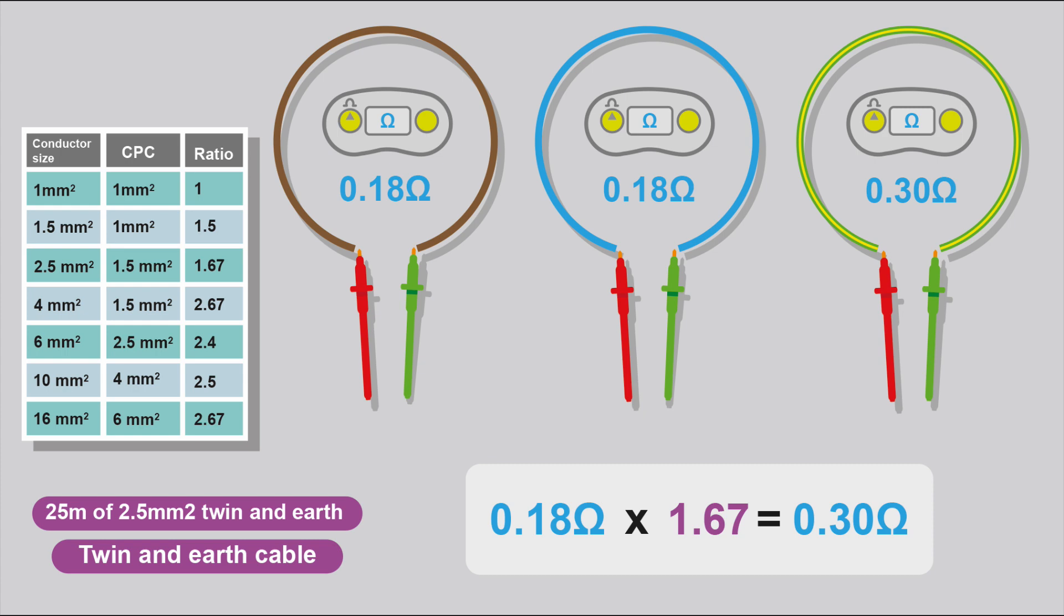If your CPC is 0.30, you know that you've got the right ratio. 0.18 times 1.67 equals 0.30.